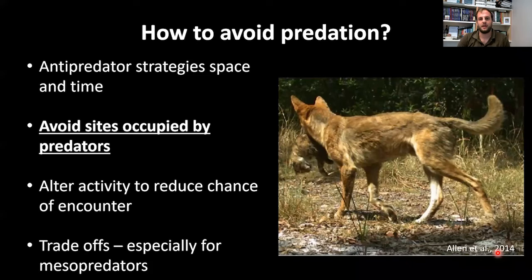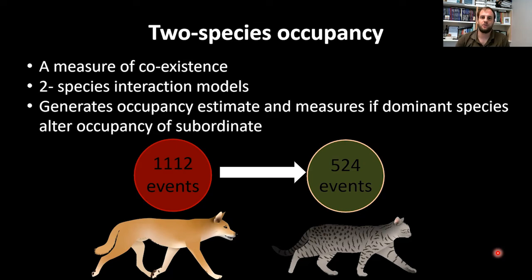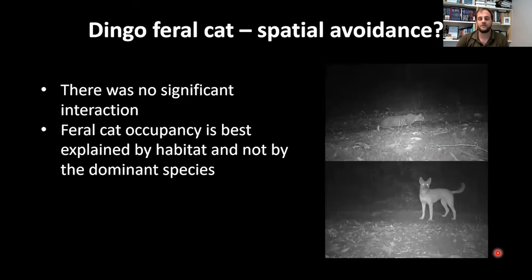To test whether dingoes repel feral cats spatially in the Wet Tropics, I employed a two-species occupancy model — a measure of coexistence assessing whether species occur independently, are attracted to one another, or avoid each other. With 1,112 dingo detection events and 524 feral cat events, I found no significant interaction between dingoes and feral cats spatially. Feral cat occupancy was best described by habitat covariates, not dingo occupancy, suggesting feral cat site use is independent of dingoes in the Wet Tropics.